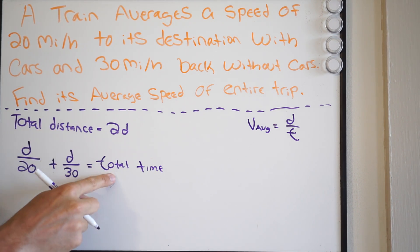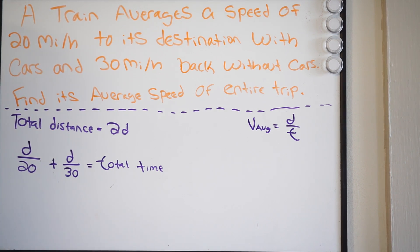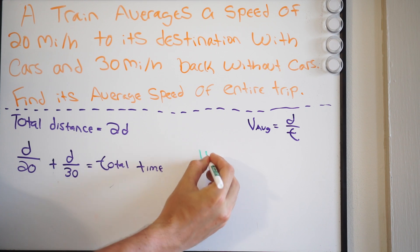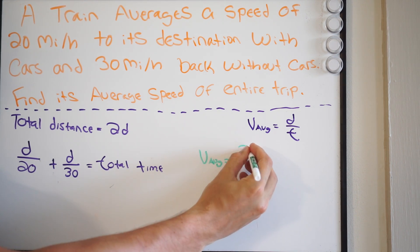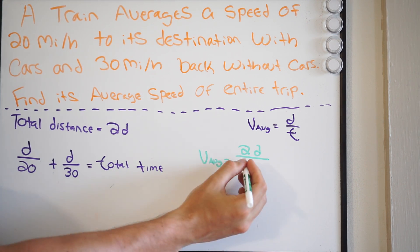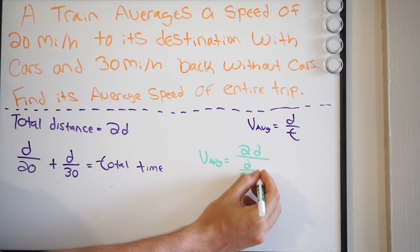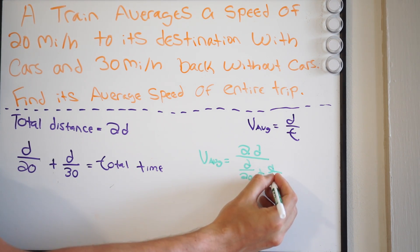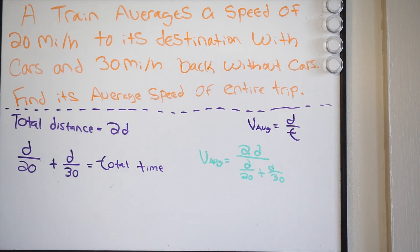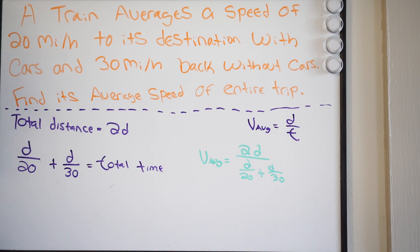If we do total distance divided by total time, that gives us the average velocity. So V average equals 2D all over D/20 plus D/30. We have to simplify this — it goes back to simplifying complex fractions like in the previous problem. Don't get overwhelmed; we're going to break this down into parts. Let's simplify the denominator first, combining the two fractions into one.